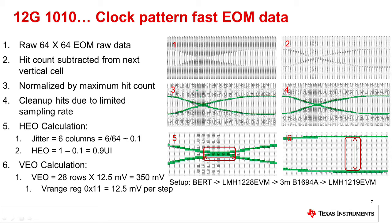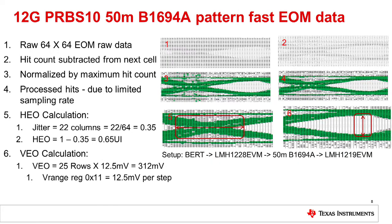In waveforms 5 and 6, we zoom into waveform 4 to calculate HEO and VEO. For VEO calculation, we count the number of rows — we have 28 rows — and each row is 12.5 millivolts per step. Therefore, the maximum vertical eye opening is 28 times 12.5, which equals 350 millivolts.